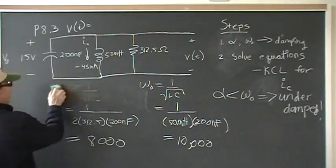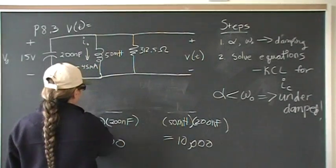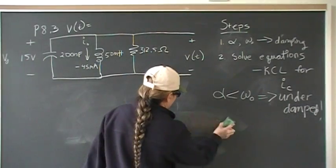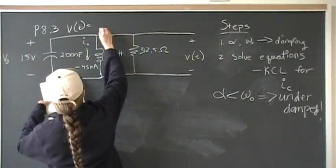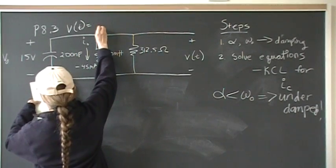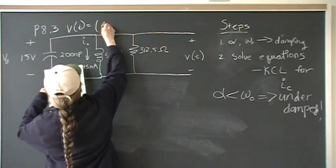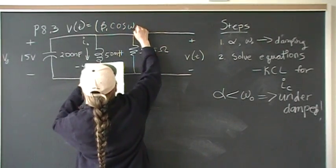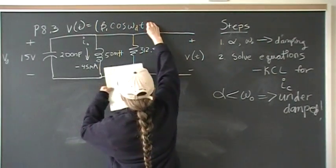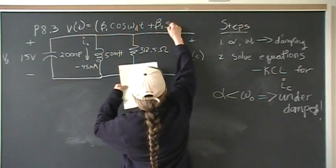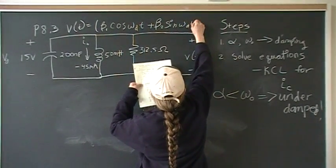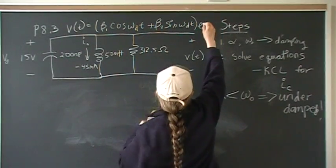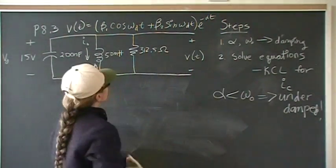So what does that mean? That means we have our equations, our voltage equation, the general form, is going to look like this. It's going to be beta 1, which we have to find, cosine omega d T plus beta 2 sine omega d T, all that times E to the negative alpha T.